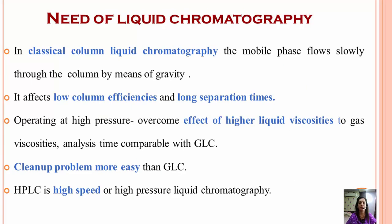In regular column chromatographic technique, what we do is we take a burette-like column filled with silica, load the sample, pass the mobile phase, and depending on its partition and retention on silica — that is solubility with the mobile phase and retention with the stationary phase — it separates the components. In classical column chromatography, the mobile phase moves slowly through the column by gravity, which affects column efficiency and results in long separation times.